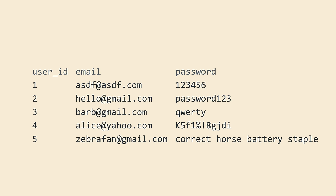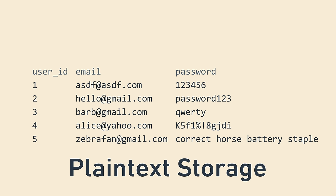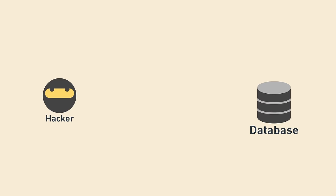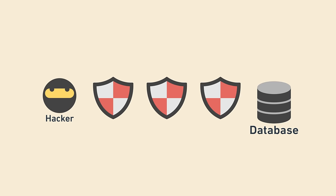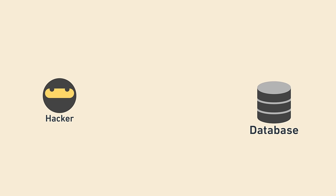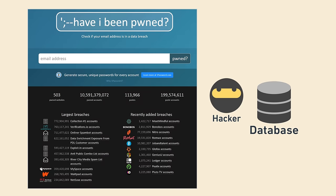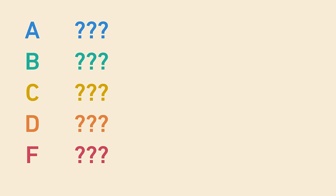The F-tier way to store your passwords is like normal data, in a normal column perhaps, with the rest of your user data. Sometimes this is called storing passwords in plain text. This is pretty bad because if a hacker gains access to your database, they can steal all the passwords effortlessly. Security is all about multiple lines of defense, and storing passwords in plain text is not a defense. If your database is breached, you're done — and database breaches happen quite often. That's why this is F-tier.